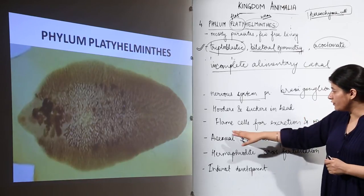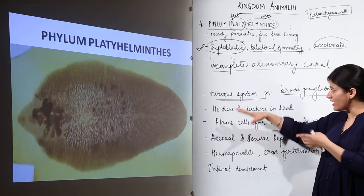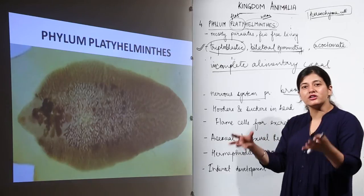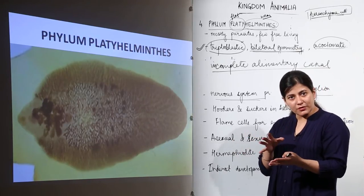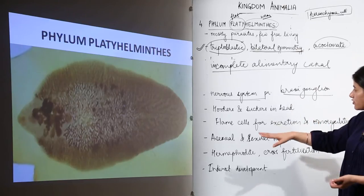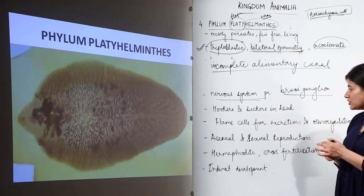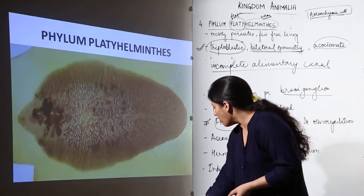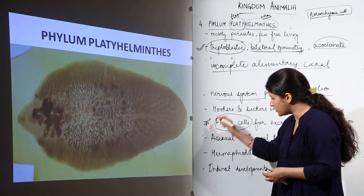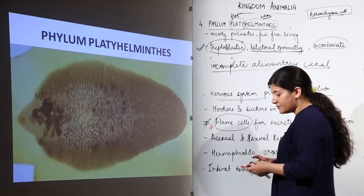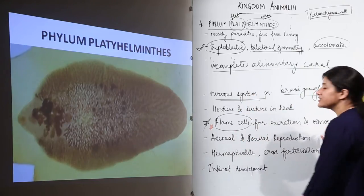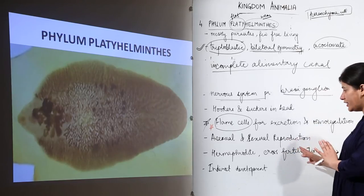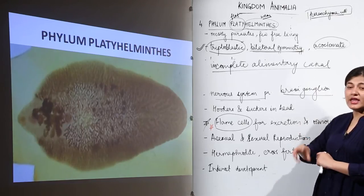With the organ system grade of organization, there is division of labor and specialized organ functions. An important characteristic feature to remember is that platyhelminths have flame cells for excretion and osmoregulation.